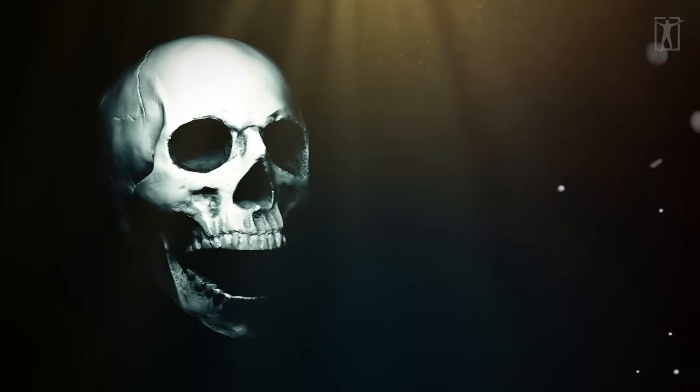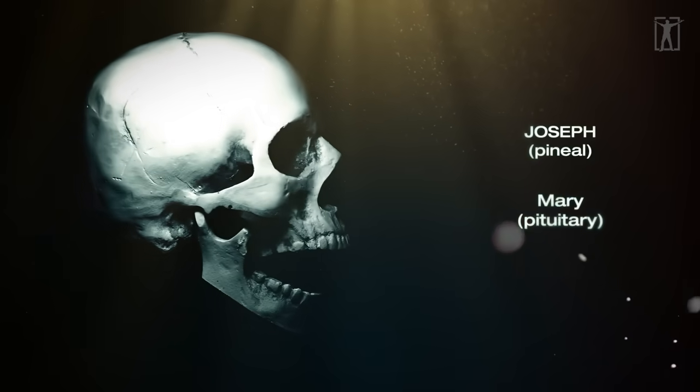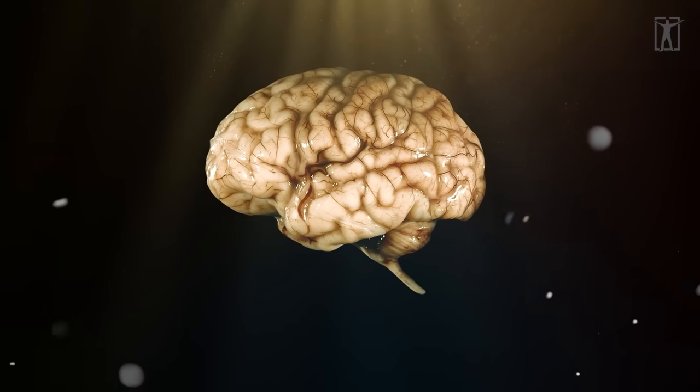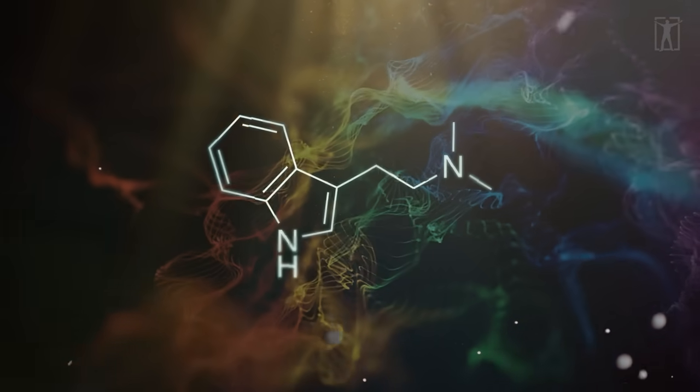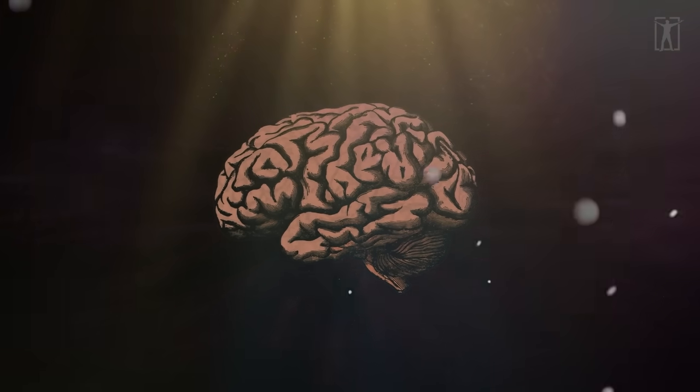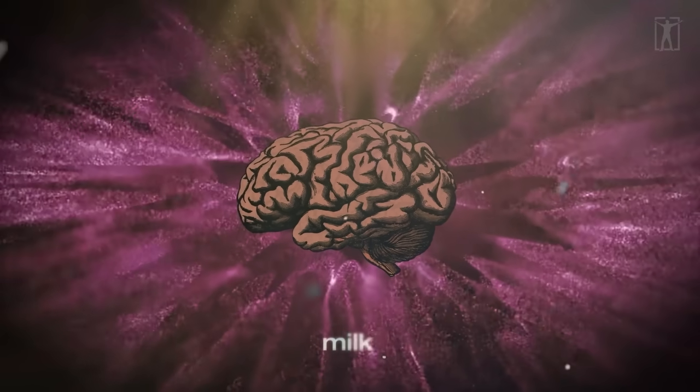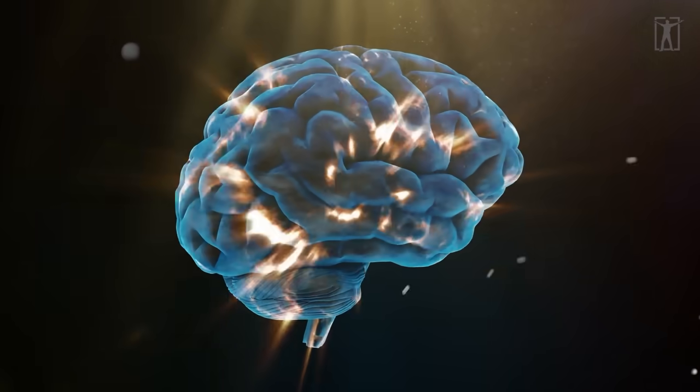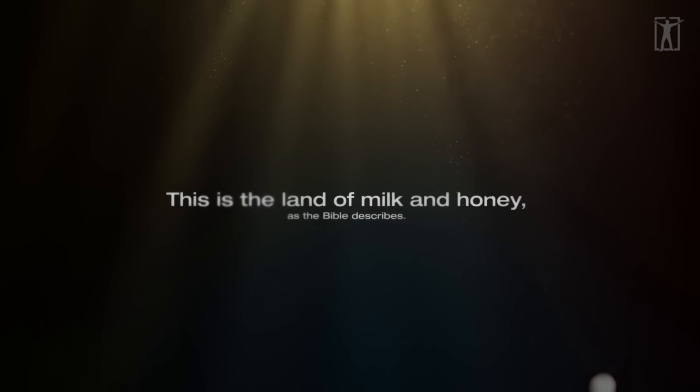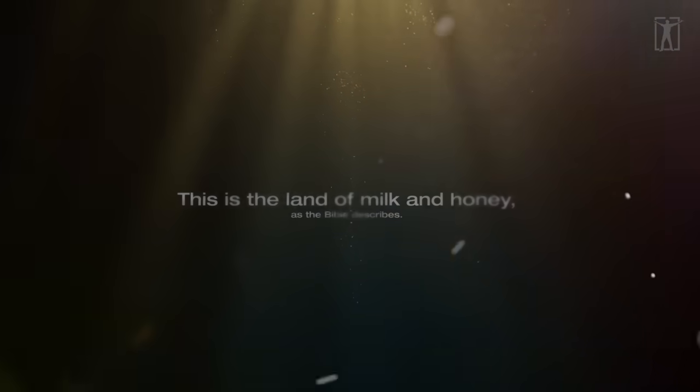These glands are called Joseph, pineal, and Mary, pituitary. The pineal gland produces a masculine electrical component known as honey, which contains DMT, while the pituitary gland produces a magnetic feminine element known as milk. The sacred heavens can also be found in our brains. This is the land of milk and honey, as the Bible describes.